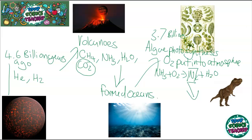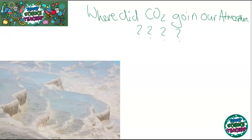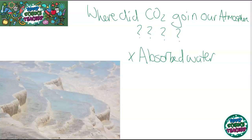Once the oxygen percentage had increased enough, that's when dinosaurs started to come around. There was sea life living in the oceans; however, around 240 million years ago is when dinosaurs roamed our planet. So between 4.6 billion years ago and 250 million years ago, we see the first life forms appearing on land. Now, where did all the CO2 go? Some of it was absorbed by the water when oceans formed, and some was used by photosynthesizing organisms.